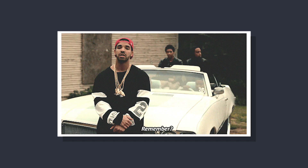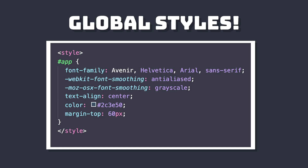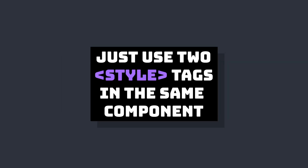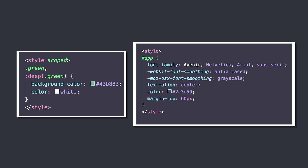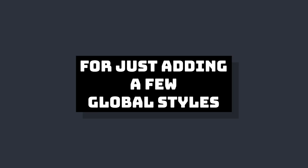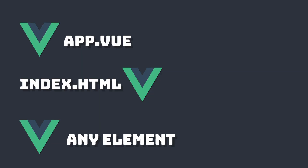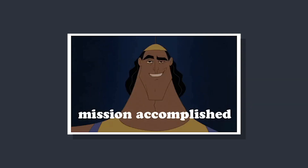As I said at the beginning of the video, if we don't use scoped styles we'll be creating global styles. But let's say your component wants both local and global styles. Simple — you can just create two different style tags, one with scoped and one without. Or if you only have one or two styles that you want to apply globally, you can use the global pseudo-class inside of your scoped styles like this. And now any element in our Vue app will be styled by that CSS rule.